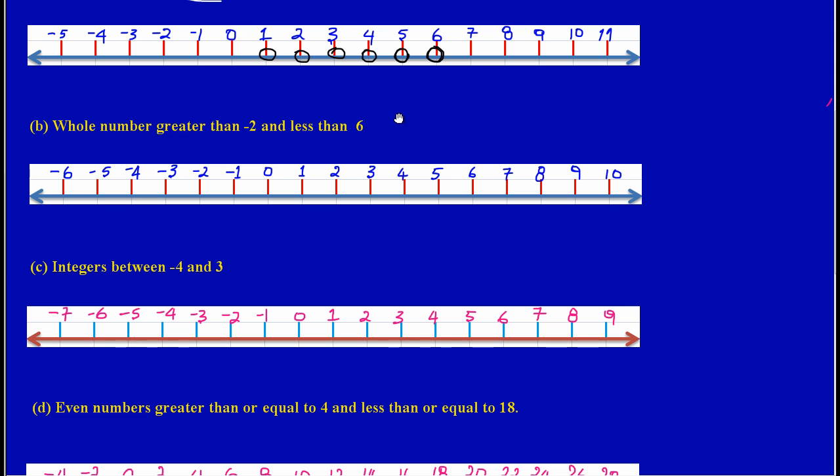Part b states that we should graph whole numbers greater than negative two and less than six. So this is the key thing that we're looking at: whole numbers greater than, this is the important term there, and less than also. So if it's greater than negative two, but remember I am dealing with what kind of numbers? I am dealing with whole numbers.